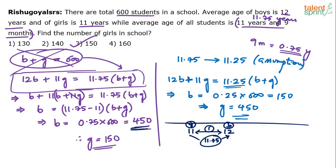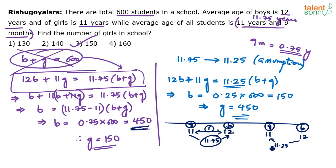Look at the same thing for the variant. When I change the average to 11.25, girls' average is 11 and boys' average is 12, but the overall average of 11.25 is closer to the girls' side — 11.25 is close to 11, not 12.